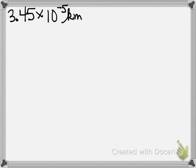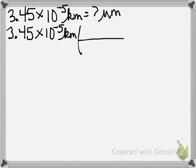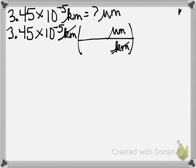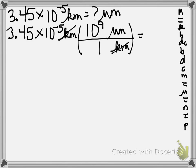Letter D: we have 3.45 times 10 to the negative 5th kilometers — we want to know how many micrometers that is. I start with 3.45 times 10 to the negative 5th kilometers. Kilometers go on the bottom. Micrometers go on the top. A kilometer is larger: 1, 2, 3, 4, 5, 6, 7, 8, 9 — 10 to the 9th. Which means we get an answer of 3.45 times 10 to the 4th micrometers.